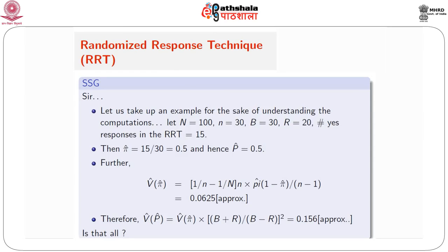A student presents a worked example: let N = 100, n = 30, B = 30, R = 20, and the number of yes responses in the RRT is 15. Then π̂ = 15/30 = 0.5, and hence P̂ = 0.5. Further, V̂(π̂) = (1/n − 1/N) × [n × π̂ × (1−π̂) / (n−1)] ≈ 0.0625. Therefore V̂(P̂) = V̂(π̂) × [(B+R)/(B−R)]² ≈ 0.156.